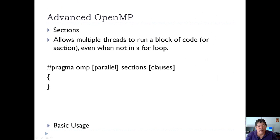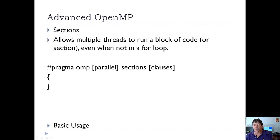We've been parallelizing loops so far in this presentation, but that's not always practical and it's not always what you want to do. There is a way to parallelize code or run the same code block multiple times. Say, for instance, you have one code block and you want to run it four simultaneous times — you can do that with OMP using what are called sections.